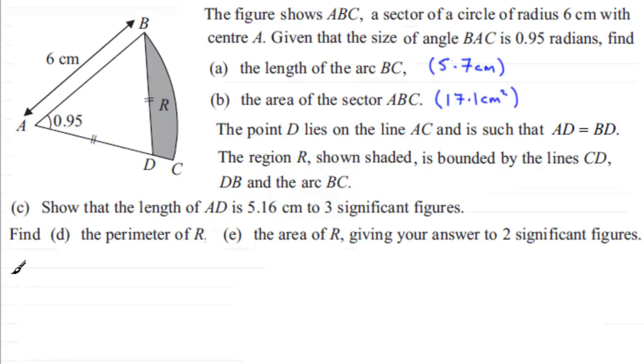Okay so for part D let's see how we would go about it. Well the perimeter of R, if we're going to find it, is just simply a case of adding our lengths together. That is the length of DC which is going to be AC which we know is 6 cm because it's the radius minus the length AD which we found out to be 5.16 cm. So we've got for the length DC that's 6 minus 5.16 cm.